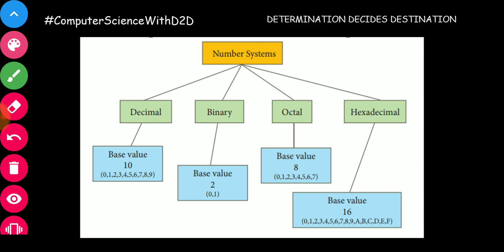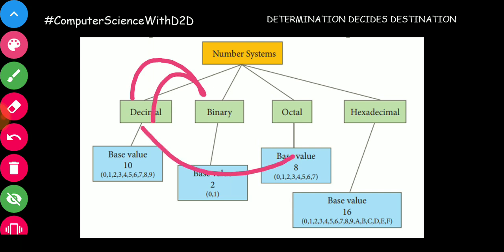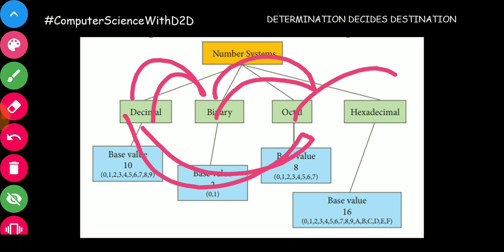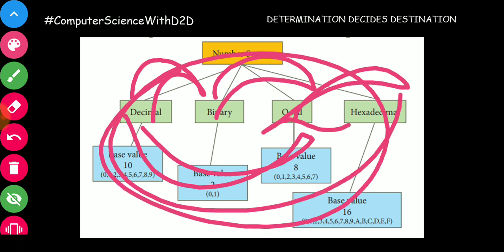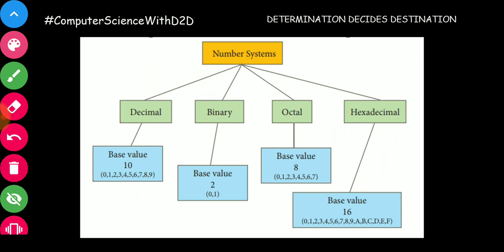Now we can do number systems. In these basic topics, we can do sums — we can do some conversions: decimal to binary, binary to decimal, decimal to octal, octal to decimal, binary to octal, octal to binary. So let's begin.